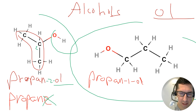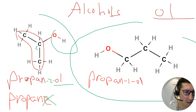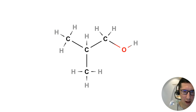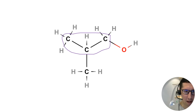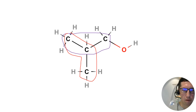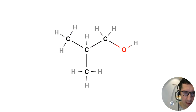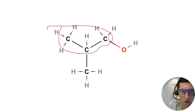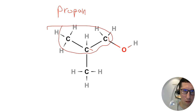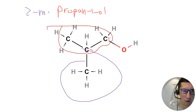In organic chemistry, every single letter matters. For a more complex alcohol example, the longest chain that keeps the functional group on it is three carbons. The functional group is on carbon one, and there's a methyl group on carbon two. So this is 2-methylpropan-1-ol.